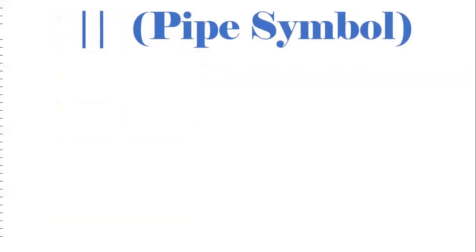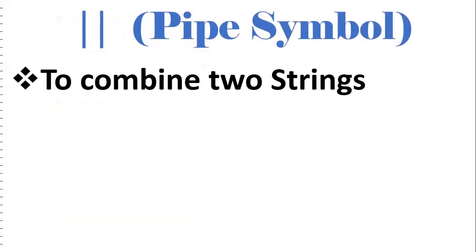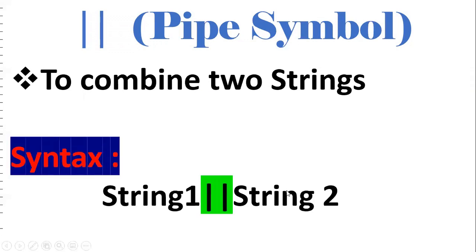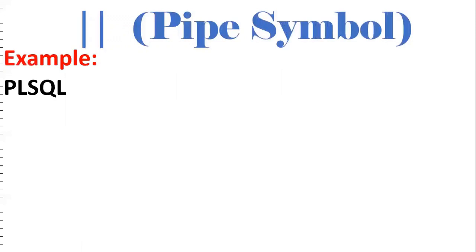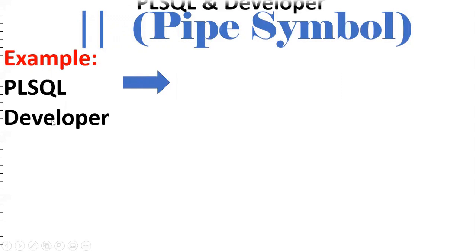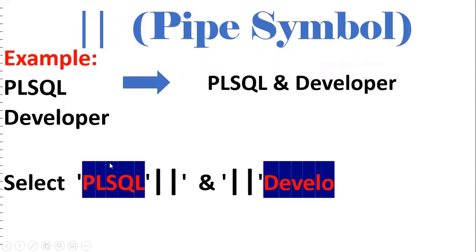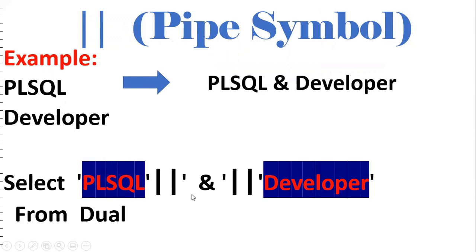The pipe symbol is used to concatenate two strings into a single string. We use double pipe symbols (||). For example, if we have the string 'PL/SQL' and 'Developer', and we want the output 'PL/SQL Developer', we can achieve this using: 'PL/SQL' || ' ' || 'Developer'. By using the pipe symbol, we can concatenate two strings.